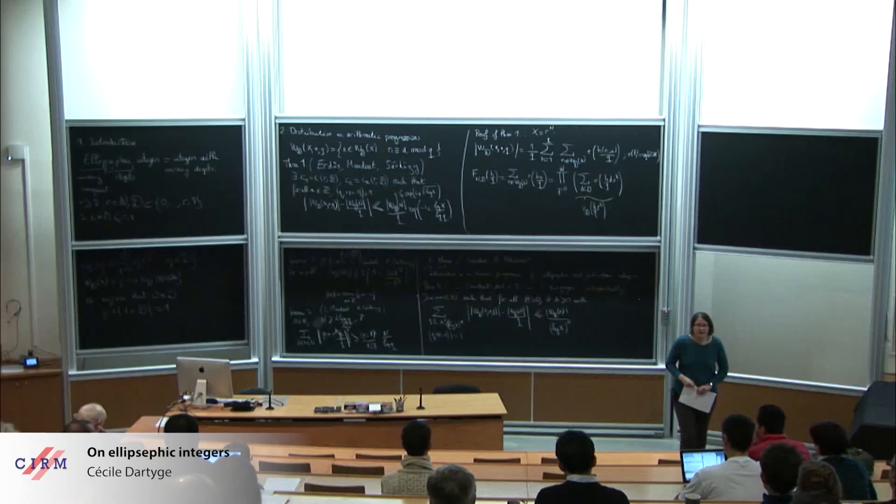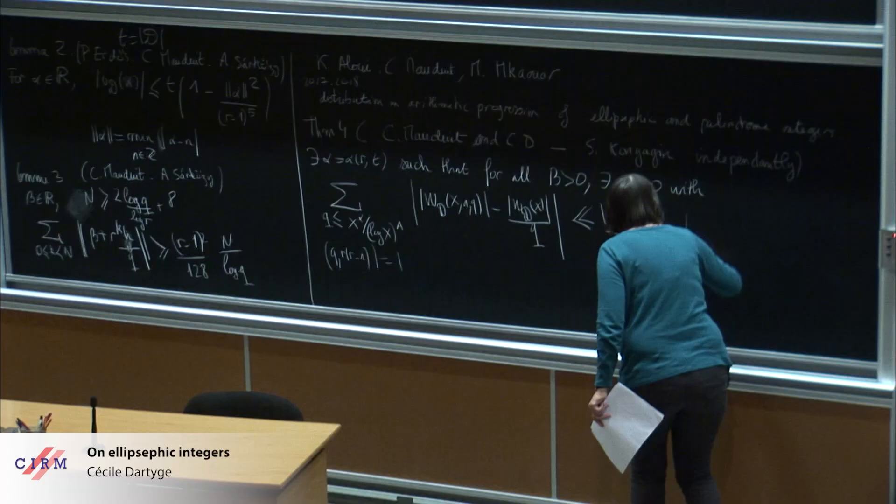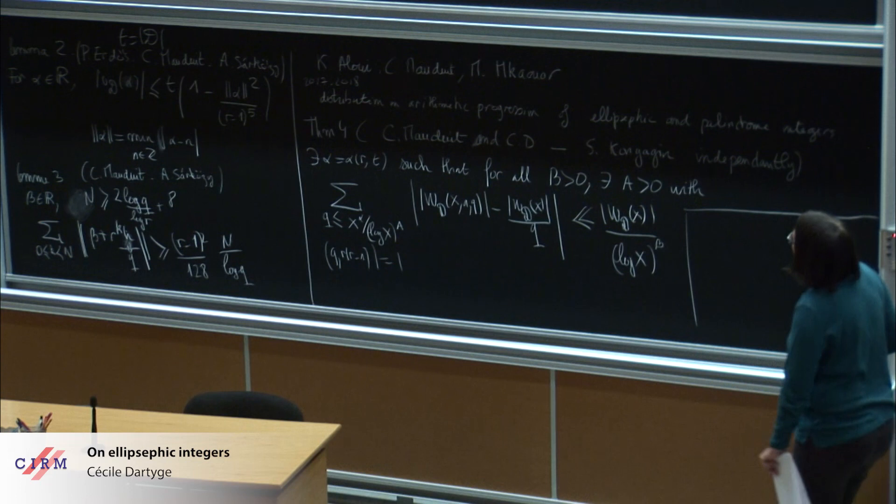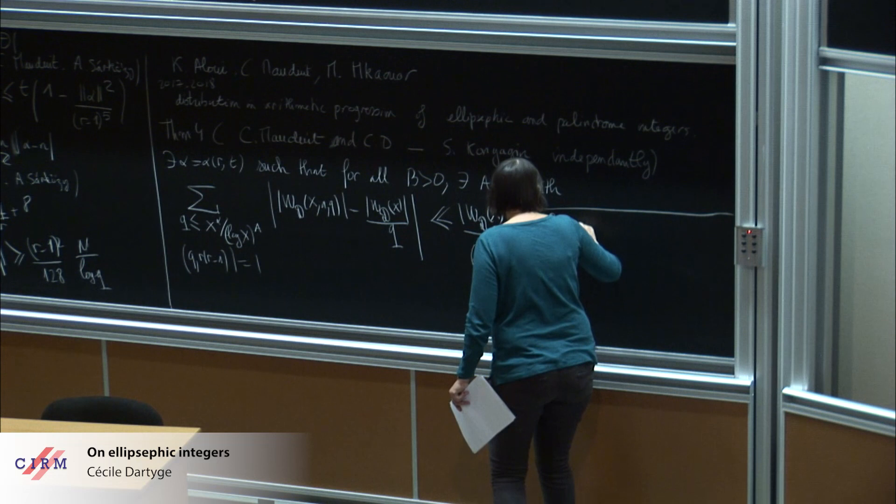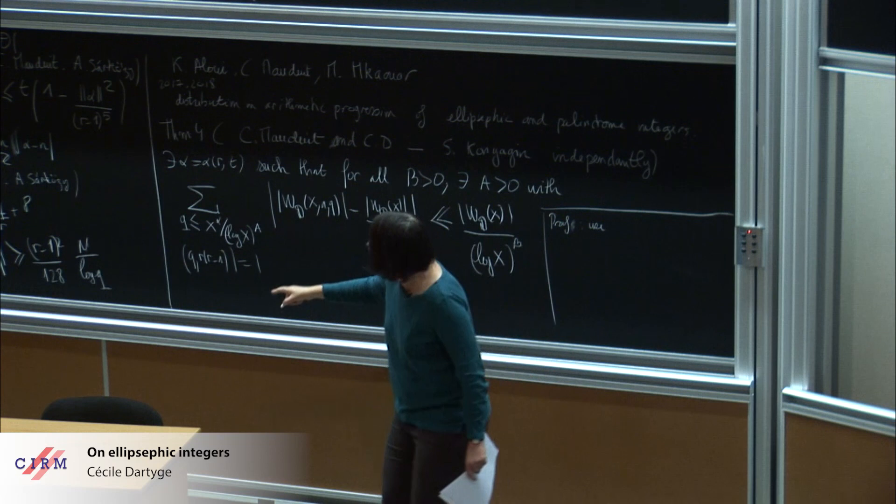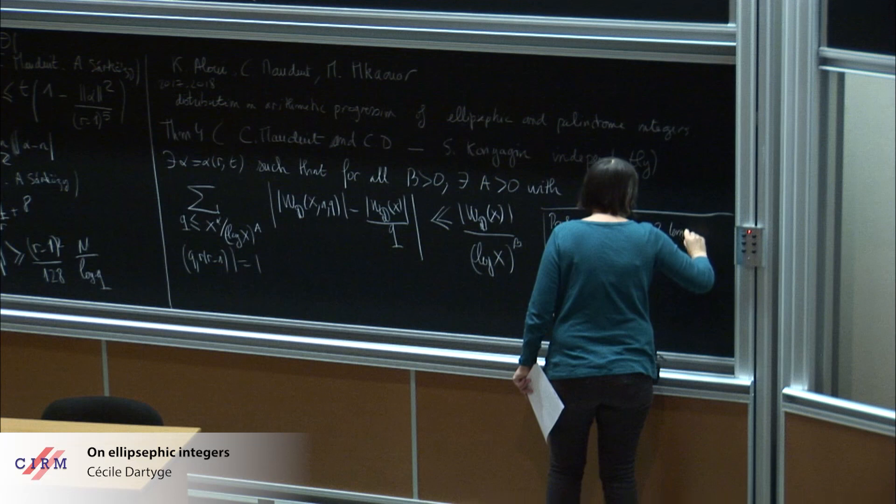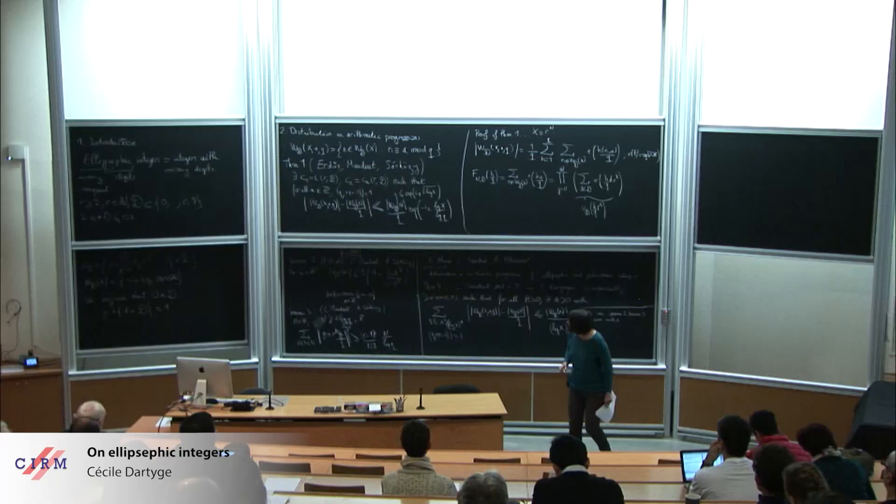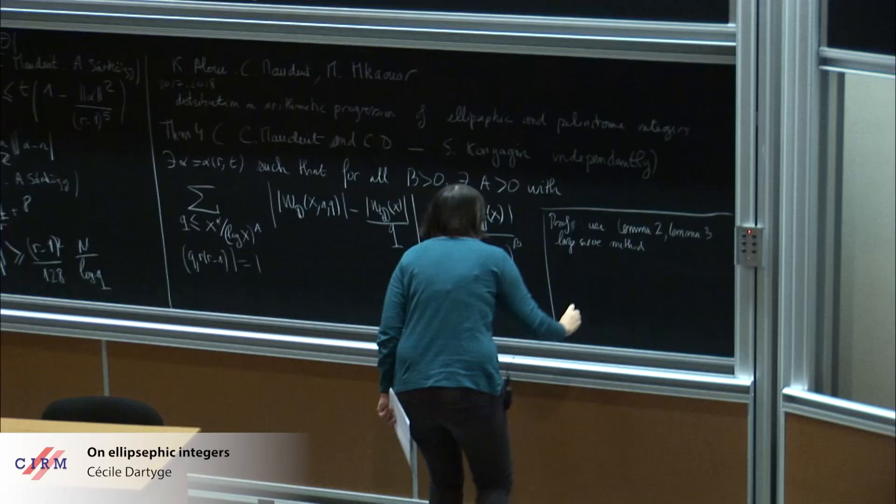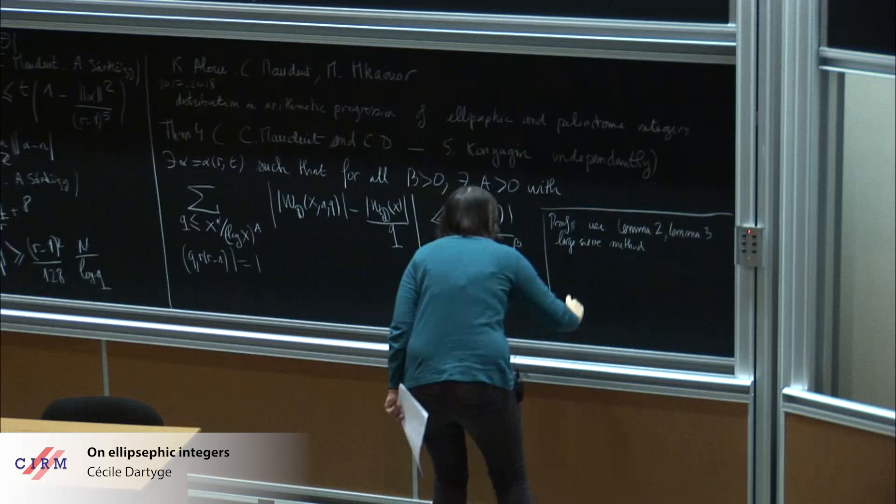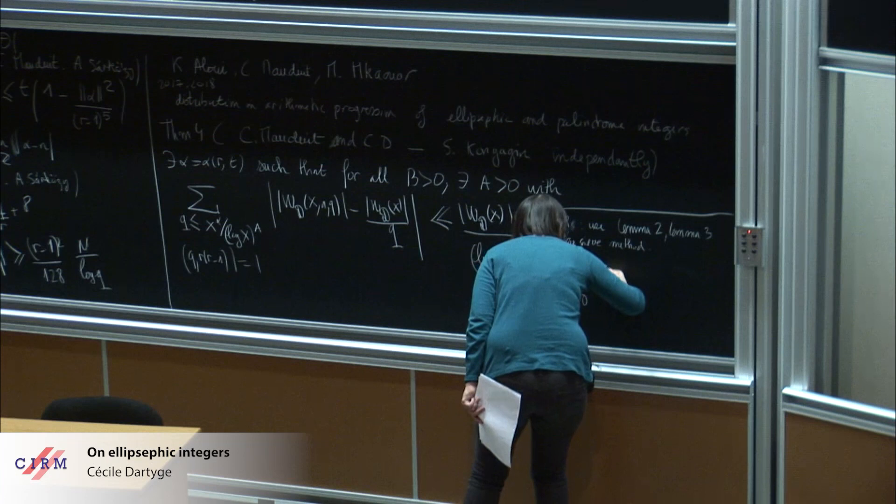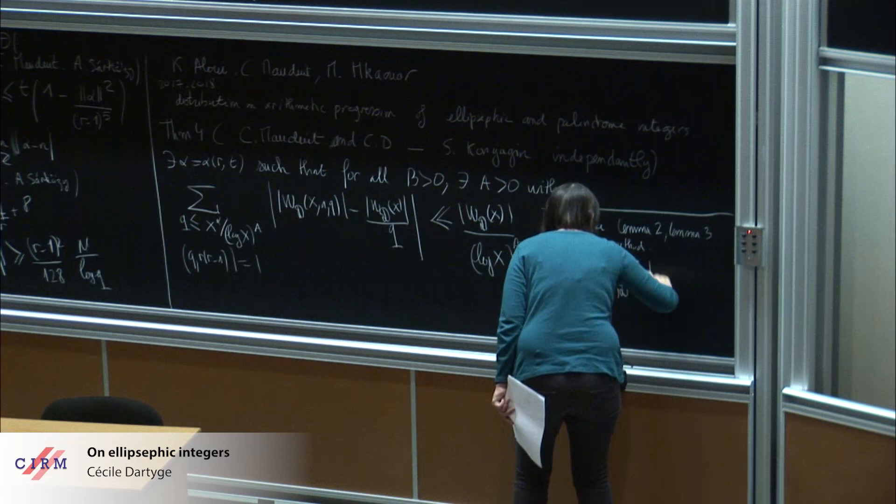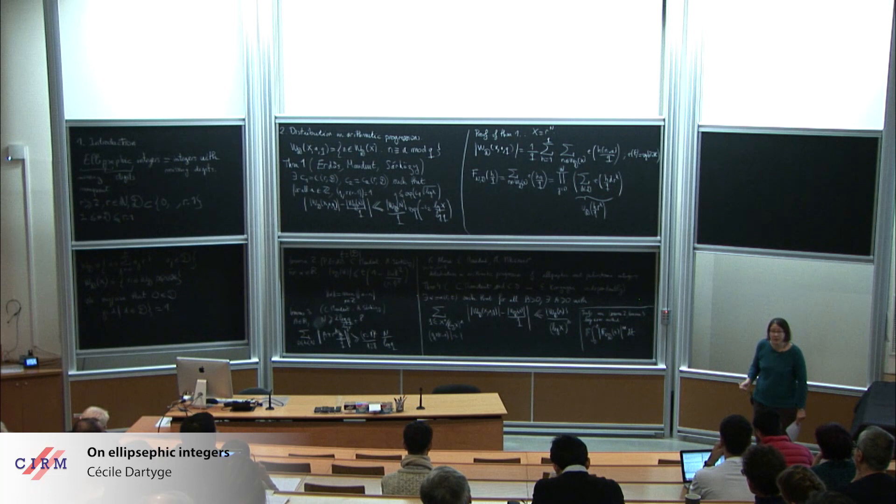We obtain that. What is the ingredient of the proof? I will go quickly. We use lemma 2 or lemma 3. It is a theorem of large sieve things. What we need also is to compute, to bound the moment of the function f and d. This is mainly the ingredient of the proof. We can also mix some powers in here to win a little, to obtain better exponents.